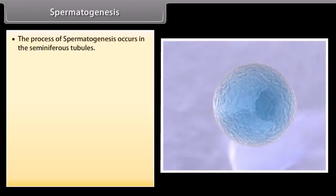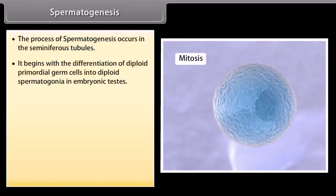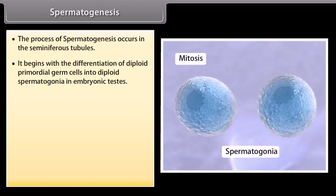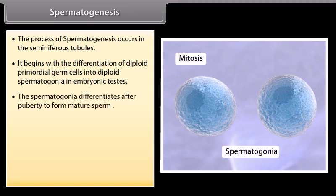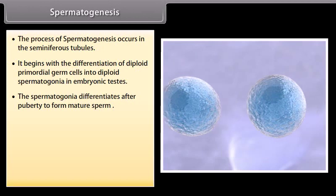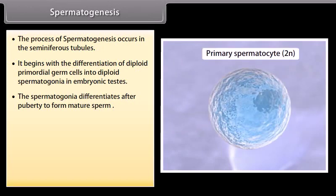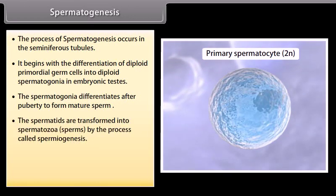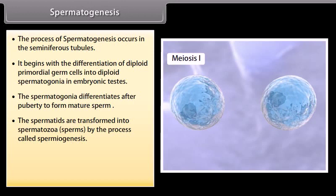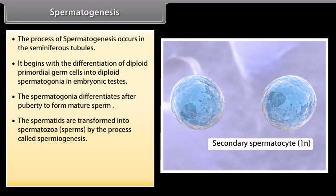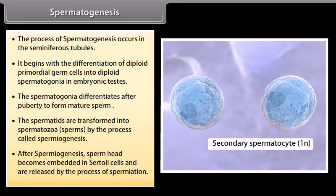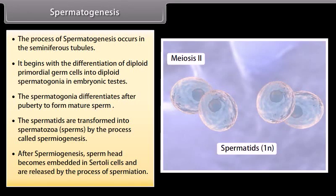Spermatogenesis occurs in the seminiferous tubules. It begins with the differentiation of diploid primordial germ cells into diploid spermatogonia in embryonic testes. The spermatogonia differentiates after puberty to form mature sperm. The spermatids are transformed into spermatozoa or sperms by the process called spermiogenesis. After spermiogenesis, sperm heads become embedded in Sertoli cells and are released by the process of spermiation.